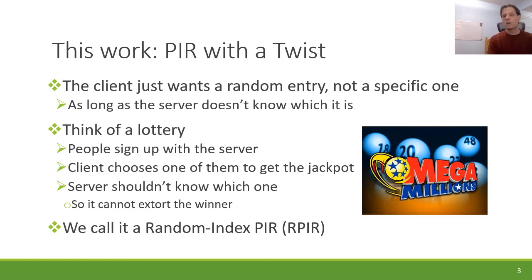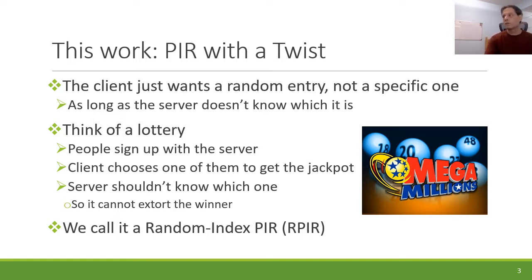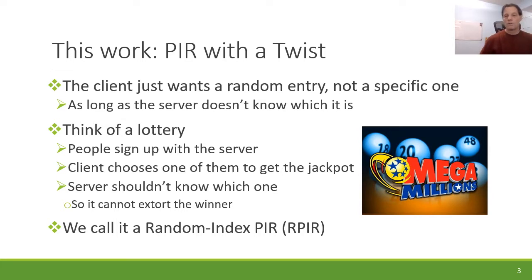In this work, we look at PIR with a twist: the client is not interested in any one particular index. It just wants to get one index — a random index — from the database, and the point is without the server knowing which one it got. Think of a lottery, for example, where people sign up with the server and give their personal details, then the client chooses a random person to get the jackpot. But the server shouldn't know who was chosen before you announce the winner, because then the server could extort them or do some other nasty thing.